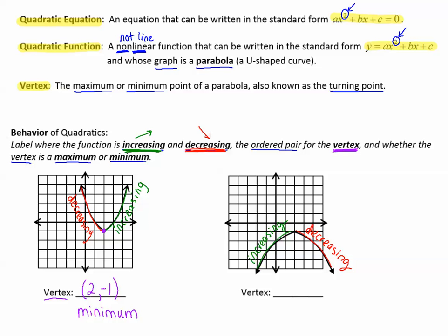Where did it turn? The turning point is right here. Again, that's at 2, negative 1, but this time, that's a high point in the graph. So this time, the vertex is a maximum.